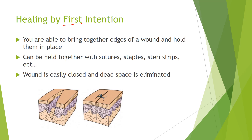The first intention is when you simply bring together both edges of a wound and hold them together. This can be held together with sutures, staples, seri-straps, and the like. It's basically when the wound is easily closed and the dead space is eliminated. As you can see here, the stitch has gone across and the dead space below the skin has just closed up with a simple approximation of the wound edges.